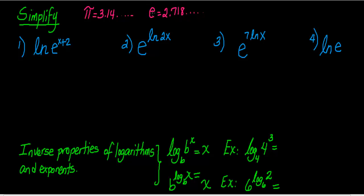When we use logs with the natural number E, the natural log is the inverse of the exponential function. For example, E to the X is an exponential function — E is 2.718 raised to the X power. The inverse of this exponential function is the natural log, and we write LN, which means natural log. Natural log is simply the log of a base E number. That's what it stands for.